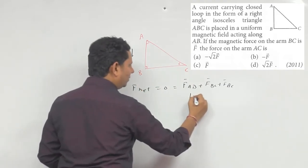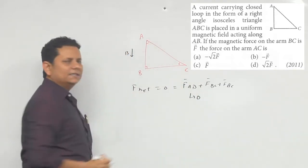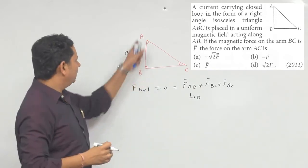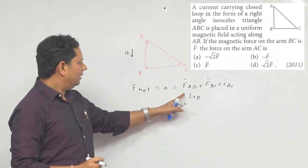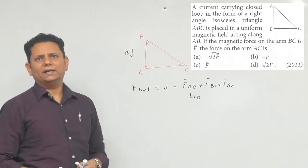F_AB will be equal to 0 because the magnetic field is along AB, so the net force is 0 here.